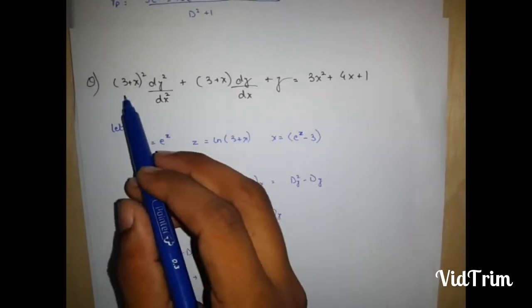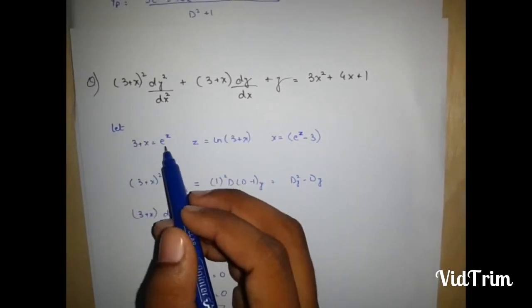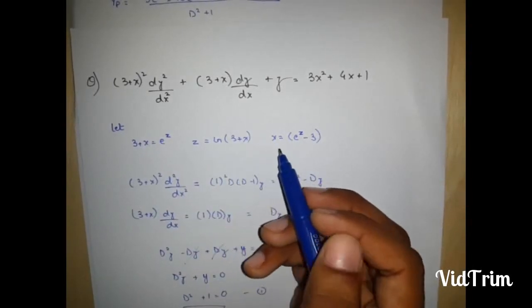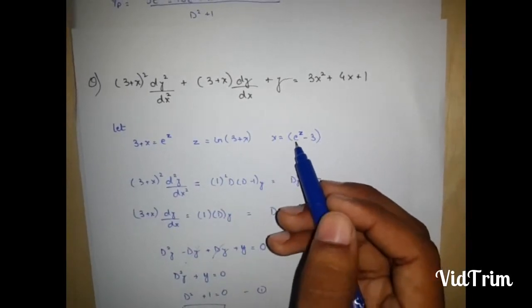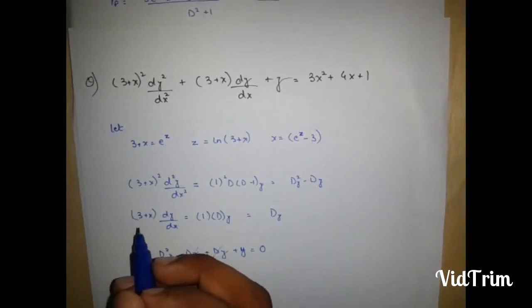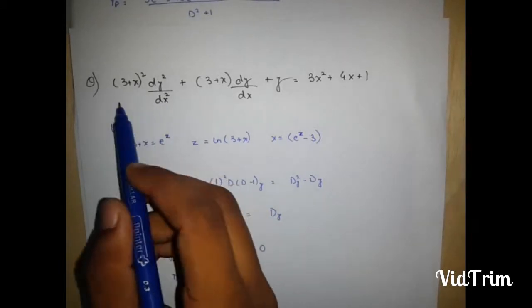Let 3 plus x is equal to e to the power z, which is step number 1, and z is equal to ln 3 plus x, and x is equal to e to the power z minus 3. Step number 2 is take this term.